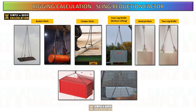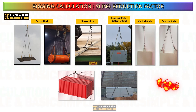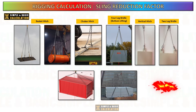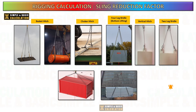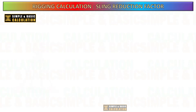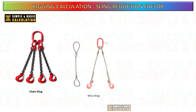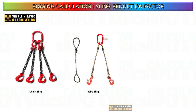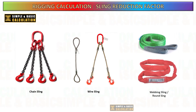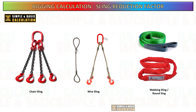Failure to account for the sling angle factor can lead to overloading of the sling, posing a risk of accidents, equipment damage, and injury to personnel. Several types of lifting equipment can be used, such as chain slings, wire slings, and webbing slings.